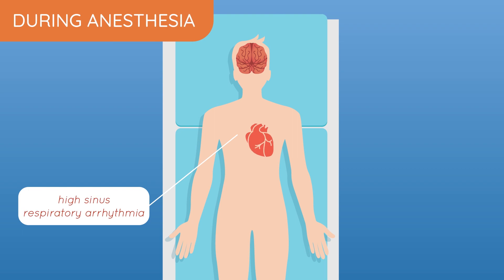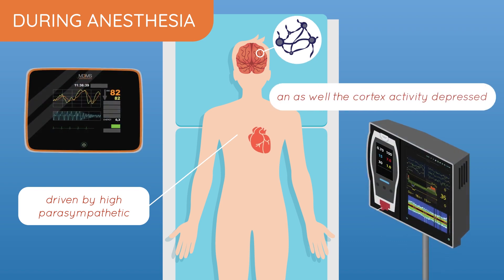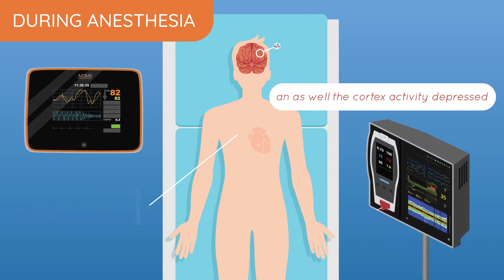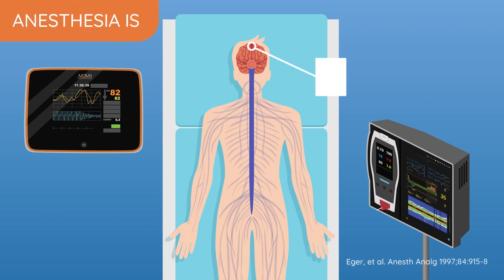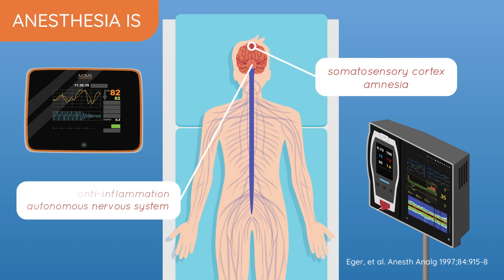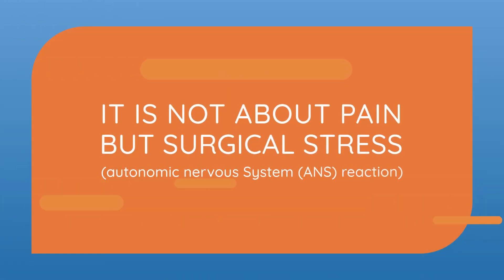Anesthesia produces high heart rate variability driven by high parasympathetic tone and low EEG activity. Anesthesia is defined by Professor Agar as amnesia and areflexia, where the cortex and the autonomic activity must be kept under control. What matters is the autonomic response and the surgical stress.